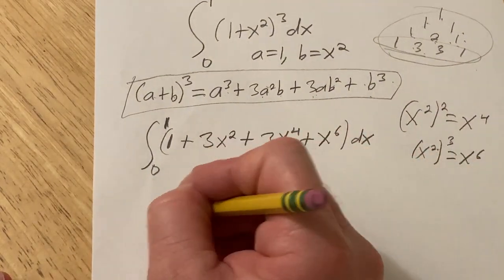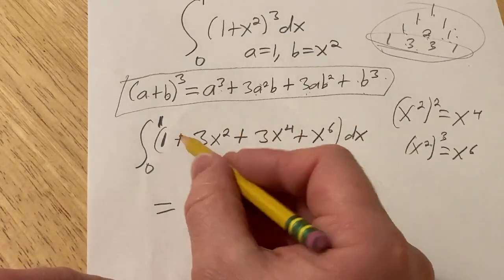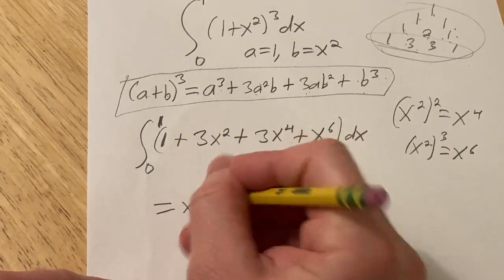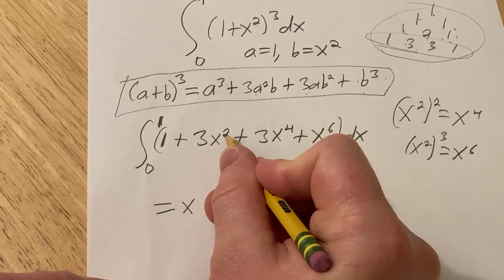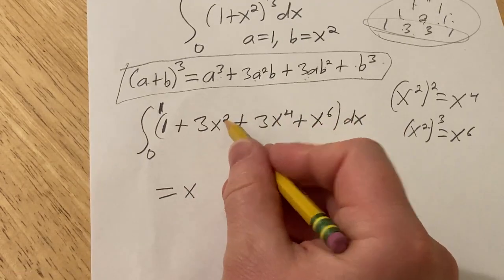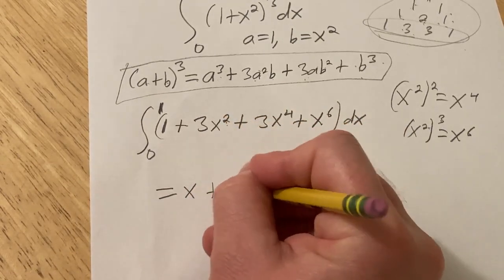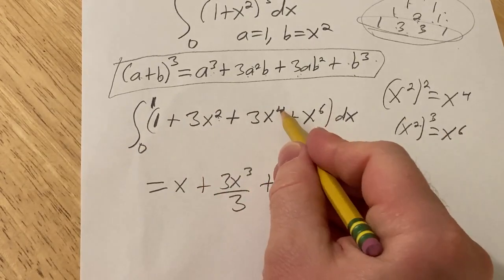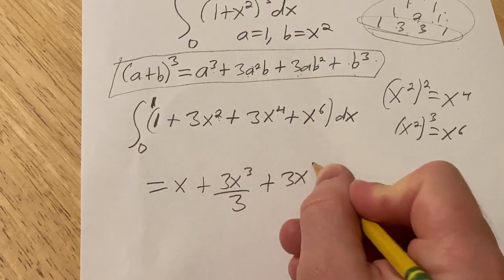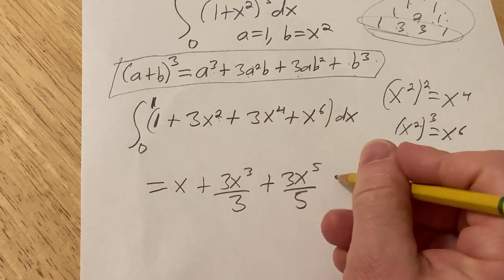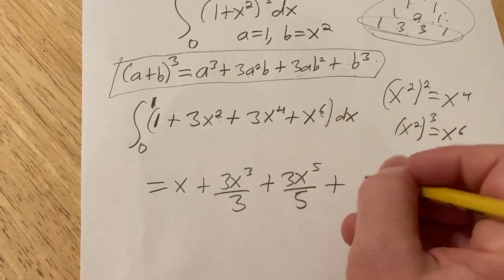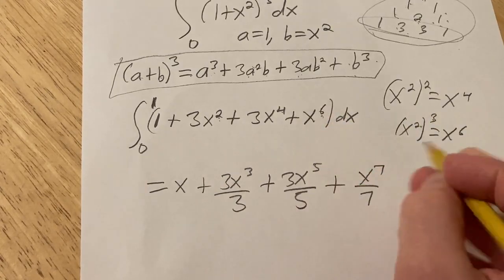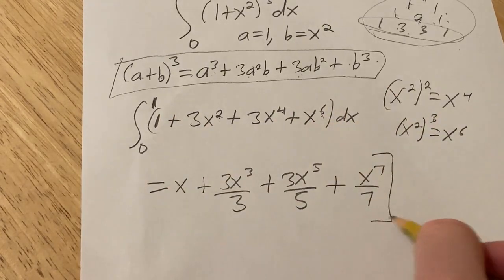All right, so now we're going to integrate this. So you integrate the 1, you get x. Integrate this, you add 1 to the exponent and divide by the result. 2 plus 1 is 3. So it's 3x cubed over 3. Plus, same thing here, add 1 and divide by the exponent. So 3x to the 5 over 5. Plus, same thing here. And we're going from 0 to 1.